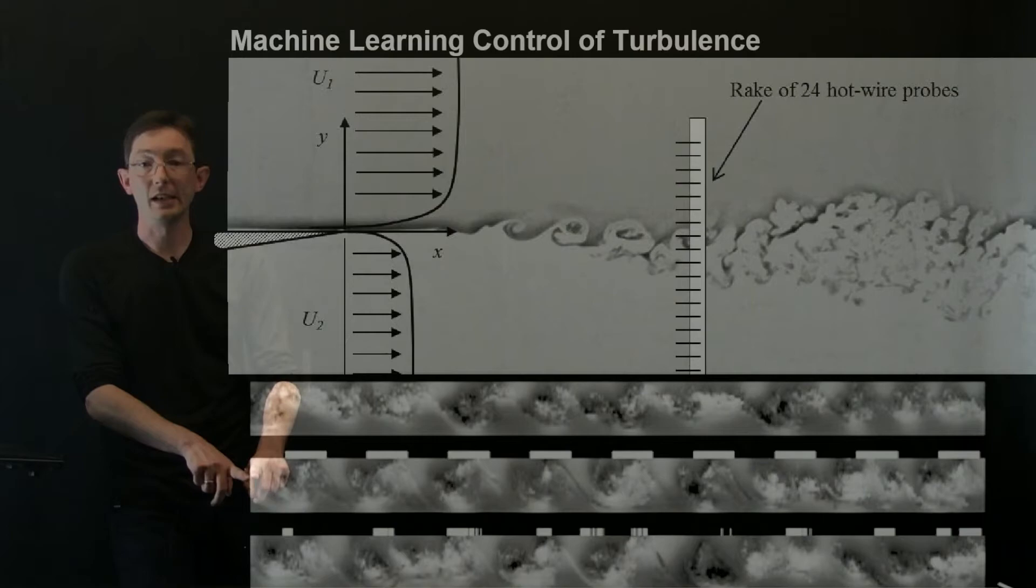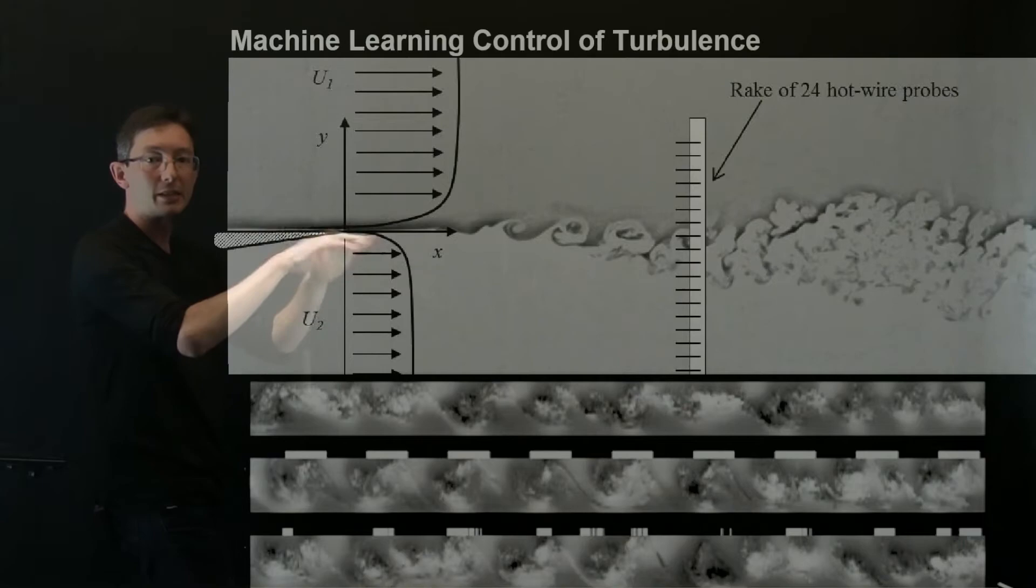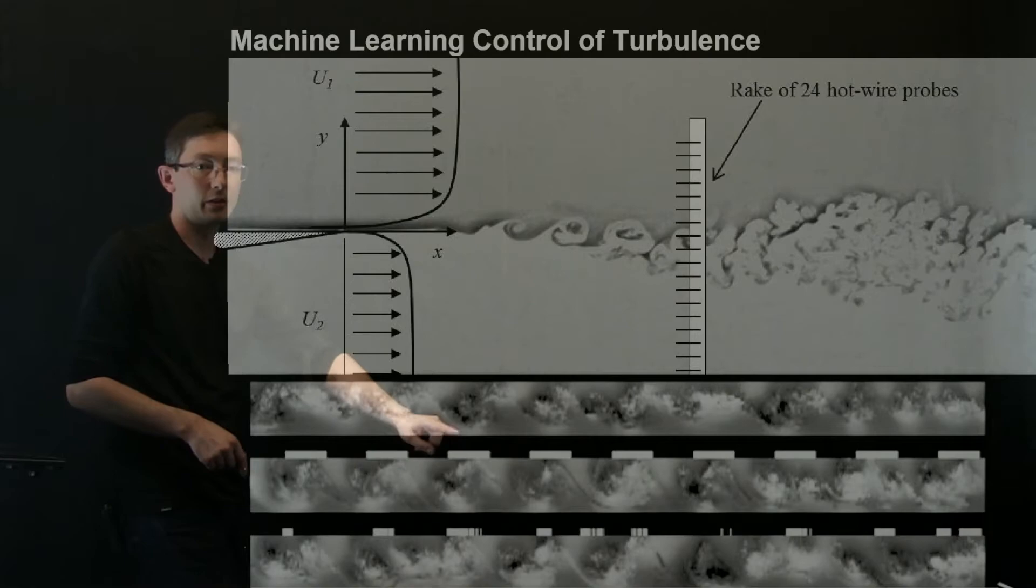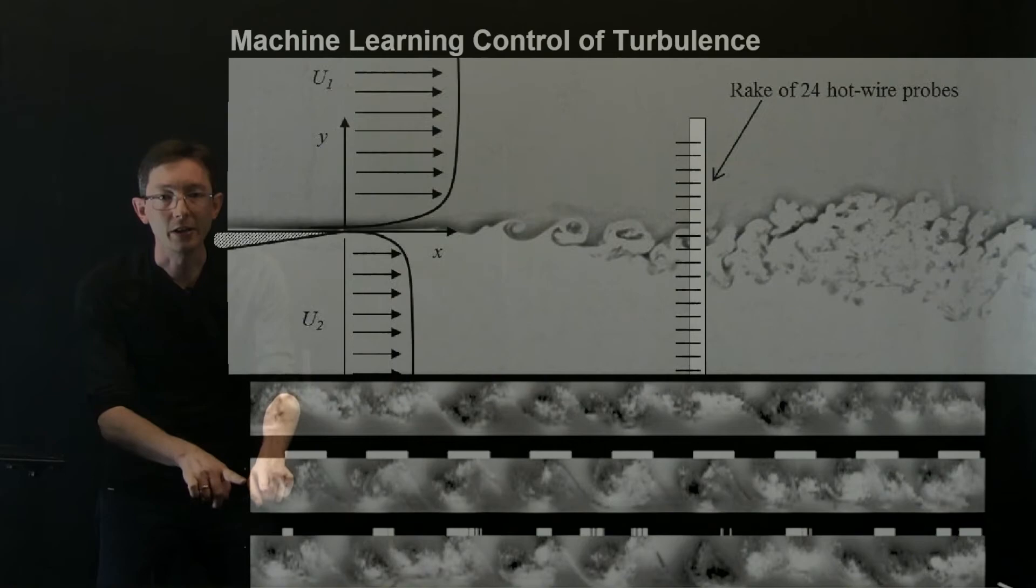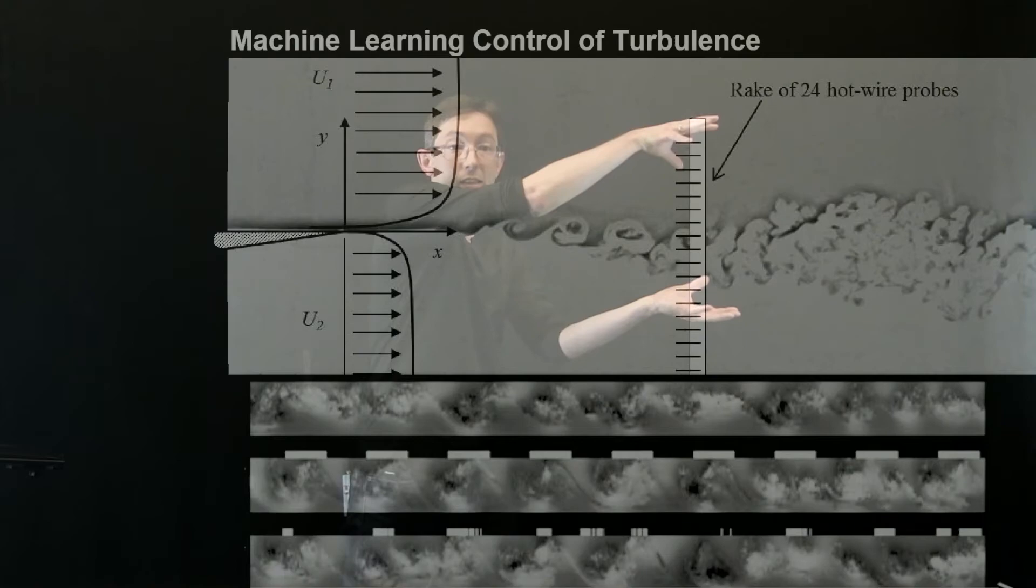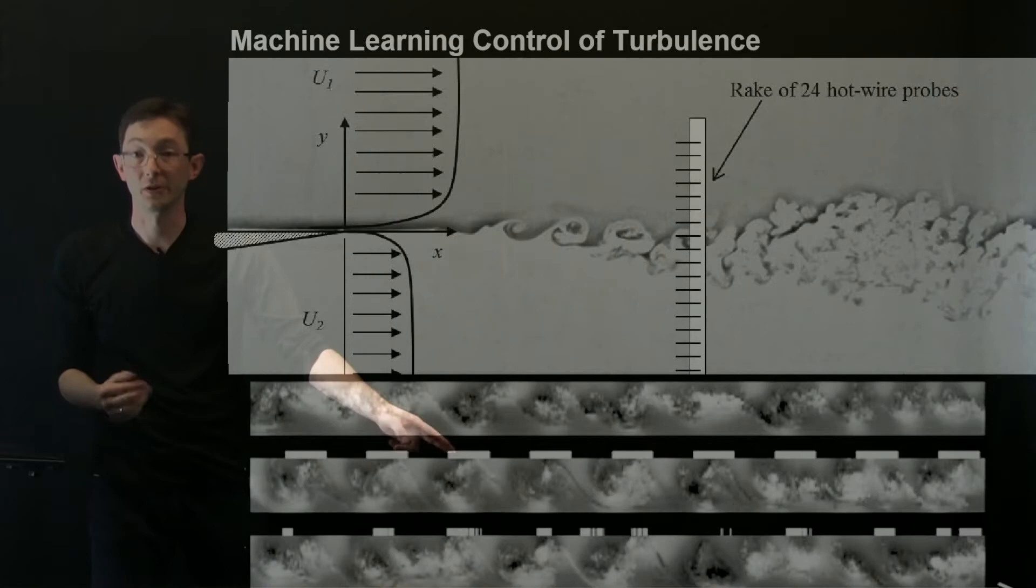And what you see in the middle is open loop forcing. So basically you take these pressure ports and you just pulse them at some periodic frequency. That's why you see like dark, light, dark, light, dark, light, in this periodic frequency. And it essentially just pulses them on and off to try to increase or decrease mixing downstream. I think in this case, we were trying to increase mixing. And you can see that these structures are much broader, much bigger. So you get more mixing kind of this broader wake downstream at the hotwire with this open loop control strategy.